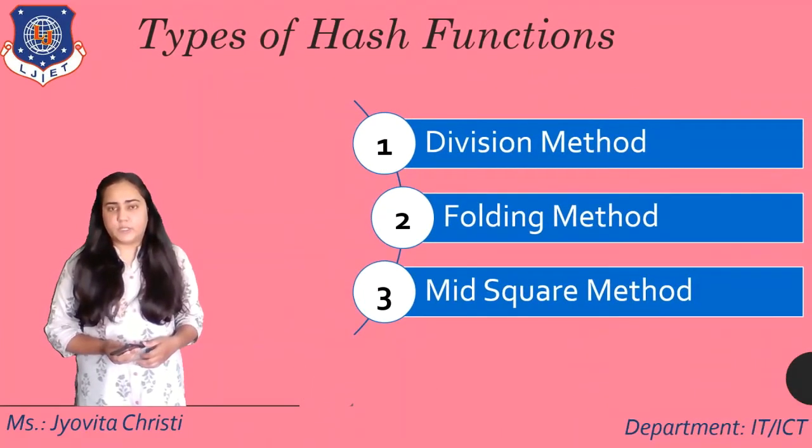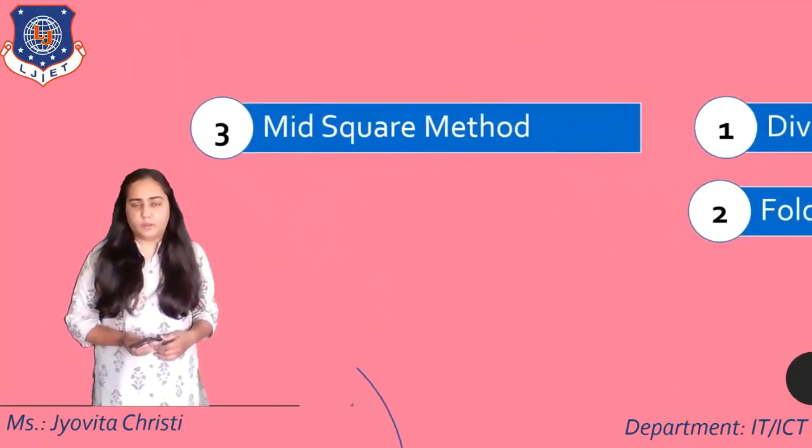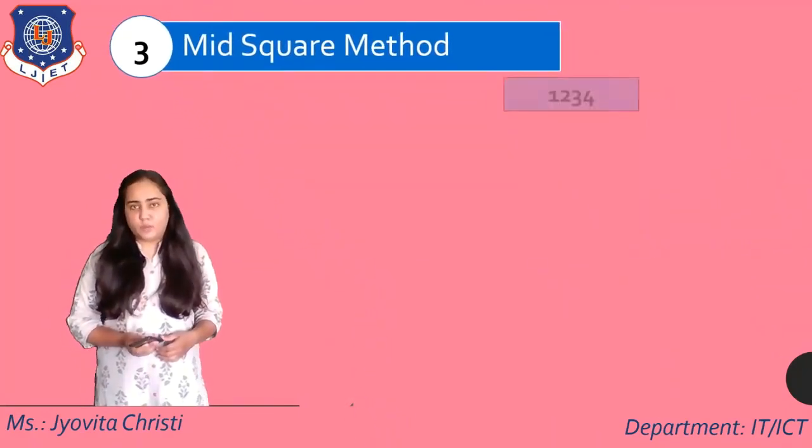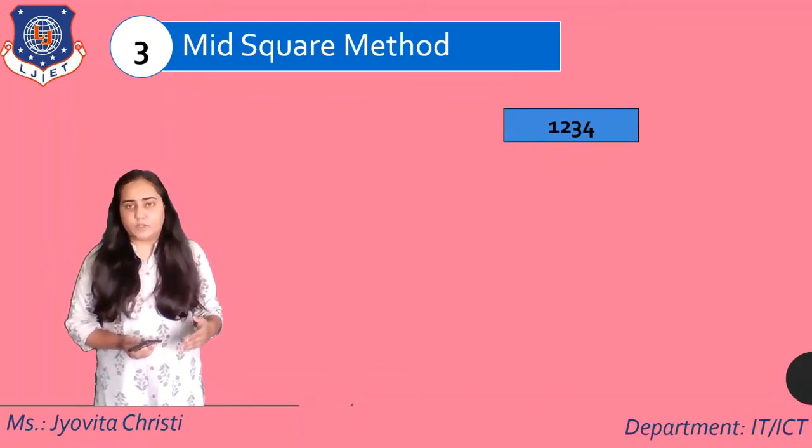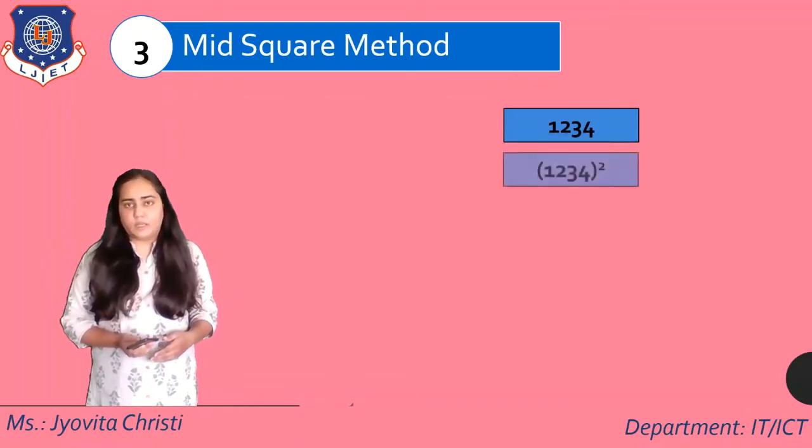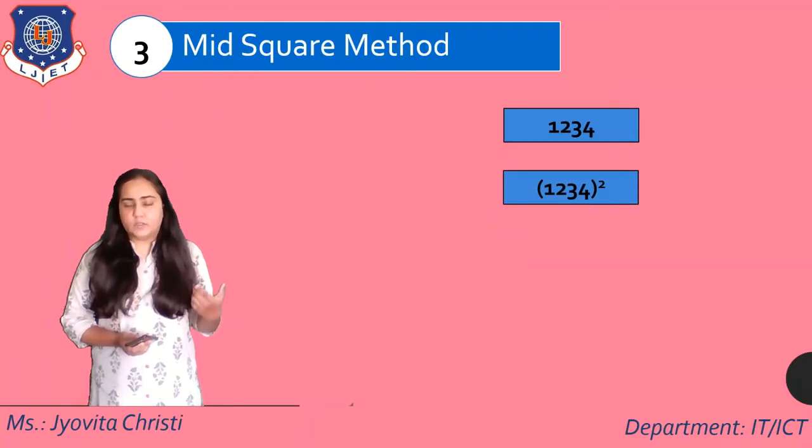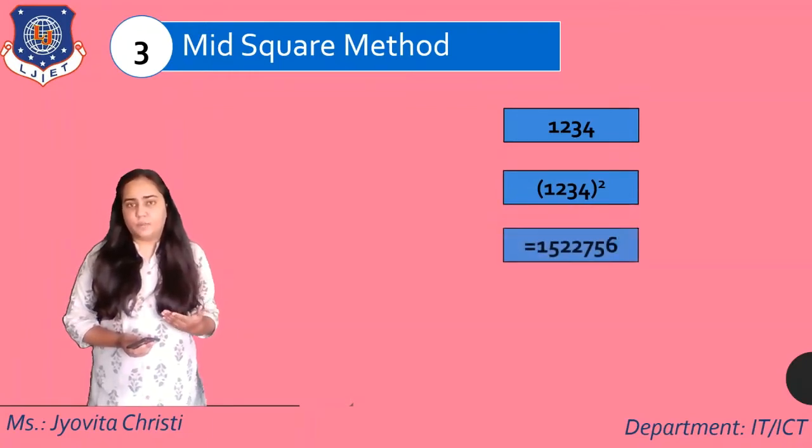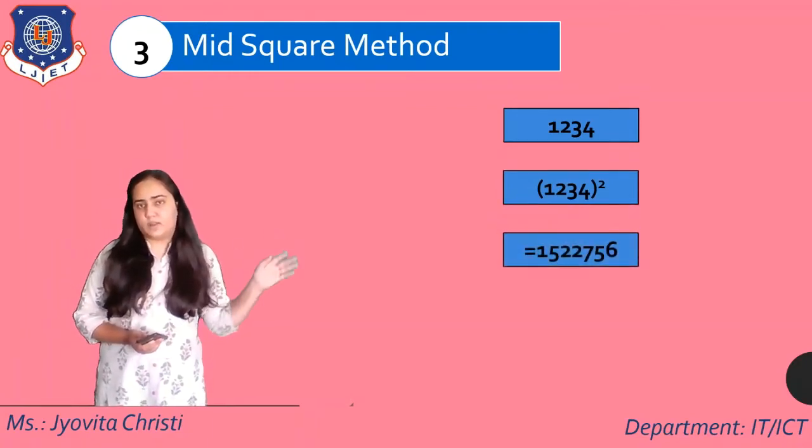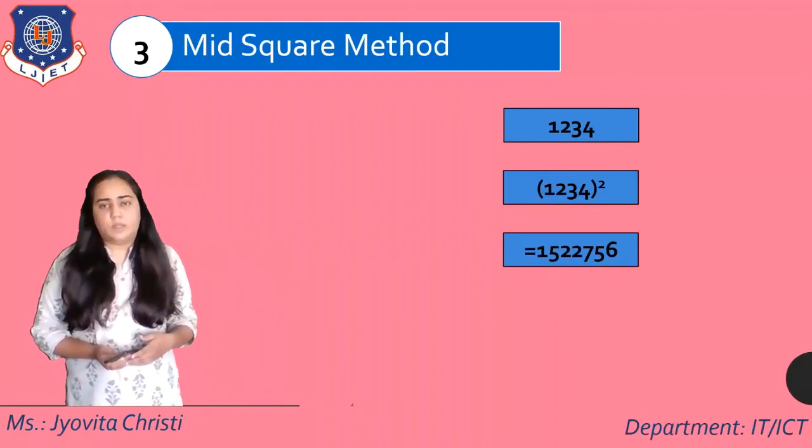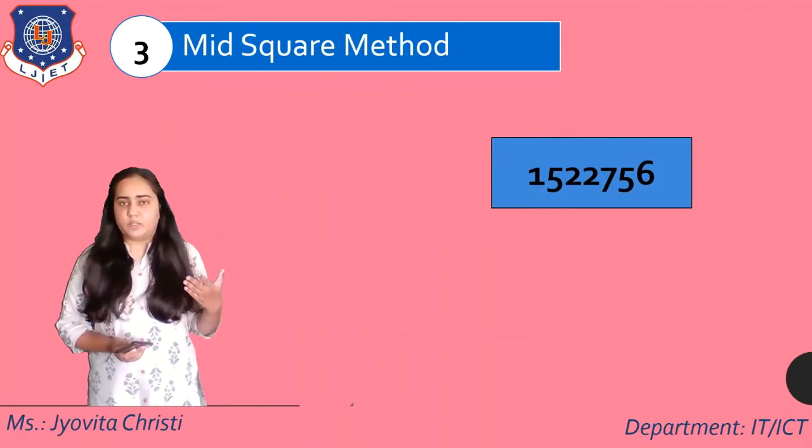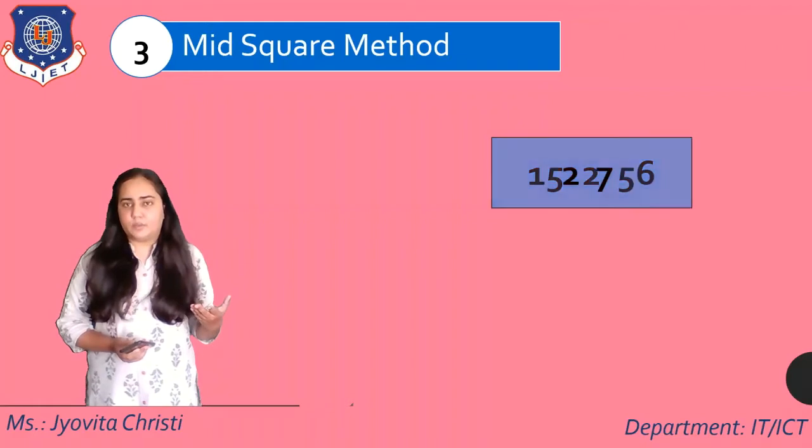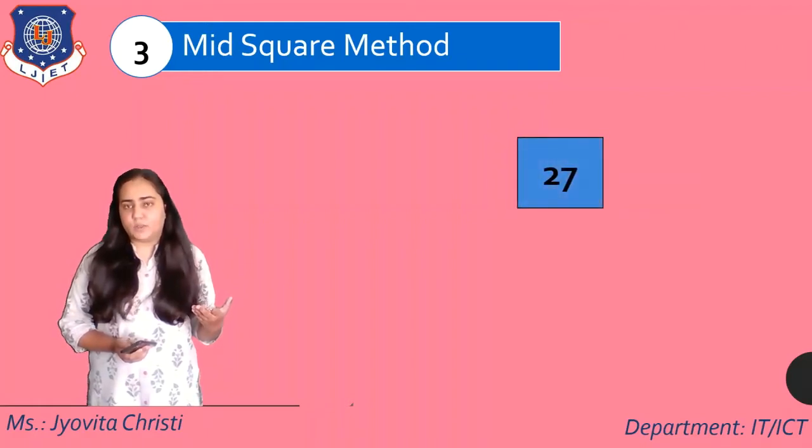The third type of hash function is known as the mid square method. Now, the mid square method is something like this. If you have a key 1234, then you are going to first of all square it. So we take the square of 1234, which gives me this number, which is a really large number. And once I get this number, what I'm going to do is take the middle portion of it. So for example, in this case, I am taking 27.